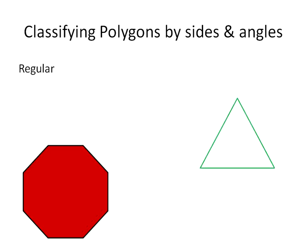A regular polygon is a very special polygon — it has both equilateral, meaning all side lengths are the same, and equiangular, meaning all interior angle measurements are also the same. You can see on this octagon that all side lengths are the same and all interior angle measurements are congruent, therefore it is a regular polygon. This triangle is also a regular triangle: it's equilateral because the side lengths are the same, and equiangular because the angle measurements are the same.